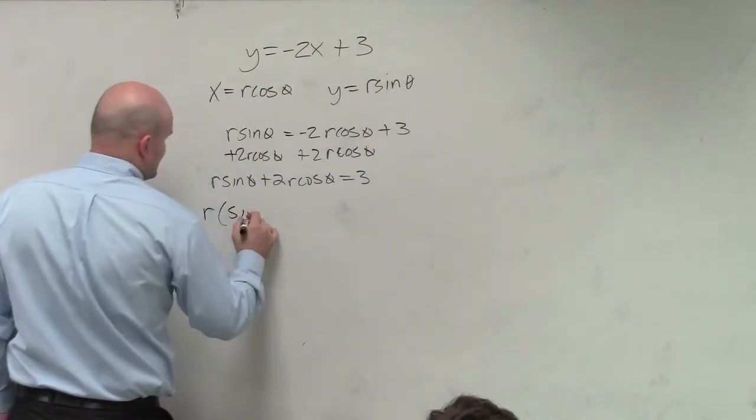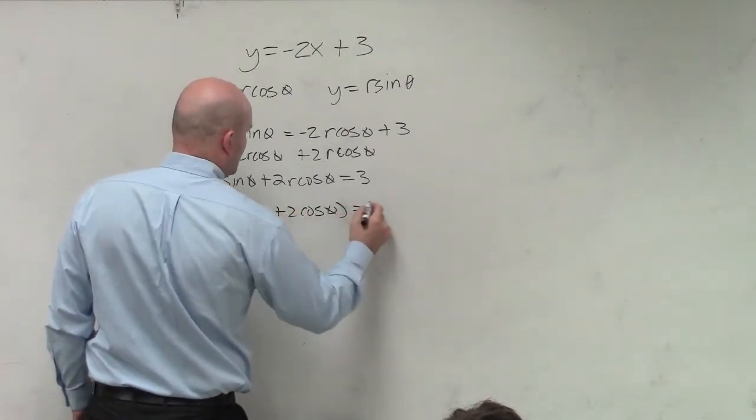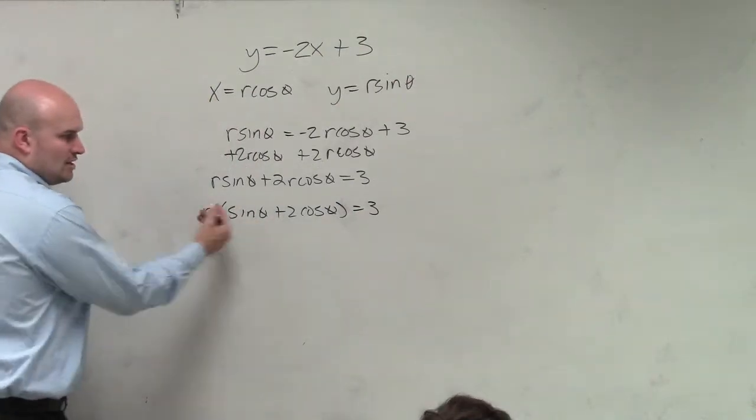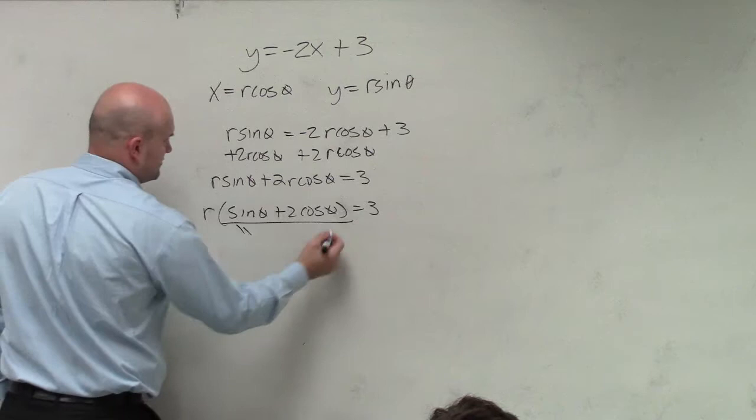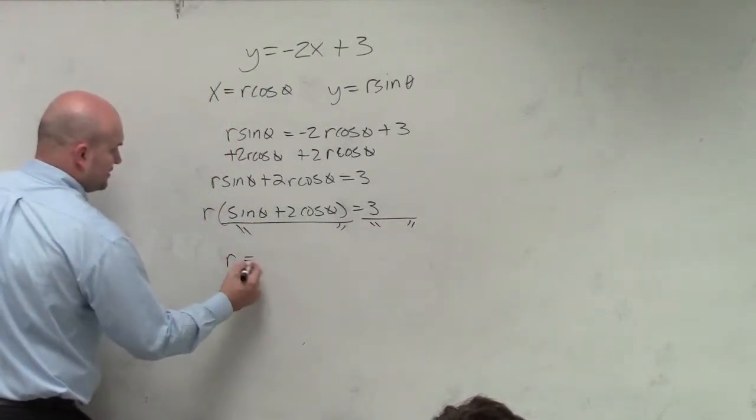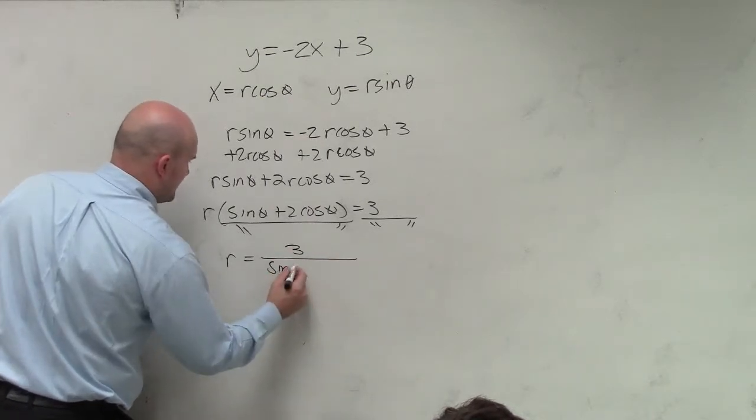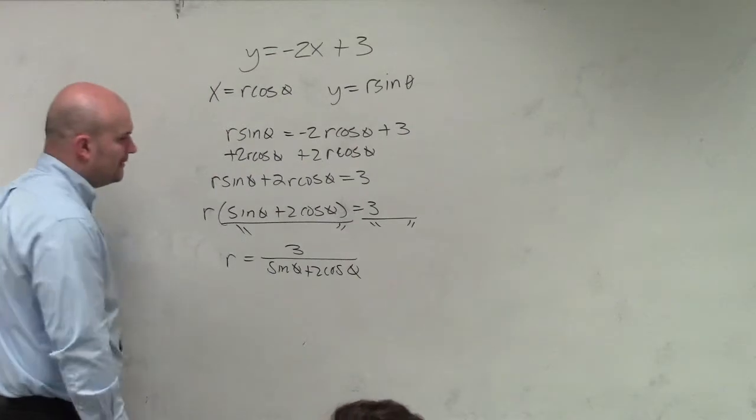And we're left with the sine of theta plus 2 cosine of theta equals 3. Now I have r times all of that. And so to solve for r, I just divide on both sides. To save just a little bit of time, I'm just going to use those quotations. And there you go.